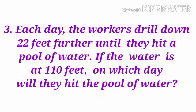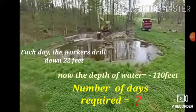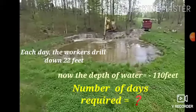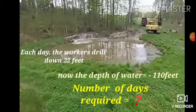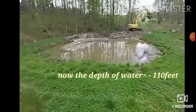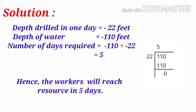Workers drill down 22 feet per day until they hit a pool of water. Drilling further down represents a negative integer, so it is minus 22 feet per day. The total depth required is minus 110 feet. Number of days required: minus 110 divided by minus 22 gives 5. Hence the workers will reach the water resource in 5 days.